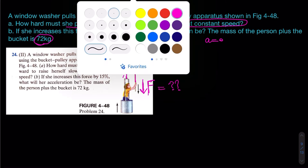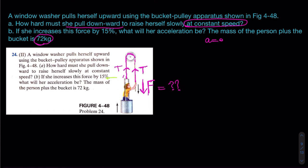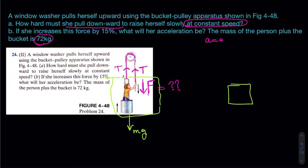On the free body diagram, we consider the person-plus-bucket as a system and draw external forces. There is also a gravitational force acting on it. Drawing this neatly: a box of 72 kg with mg acting downward and two equal tension forces T acting vertically upward on the object.